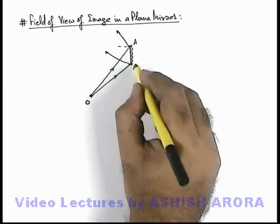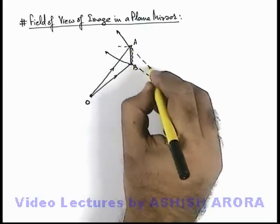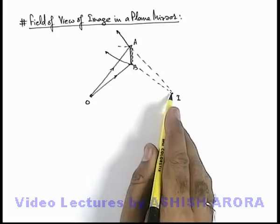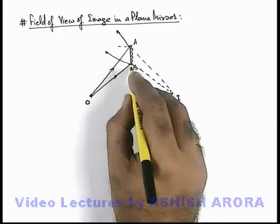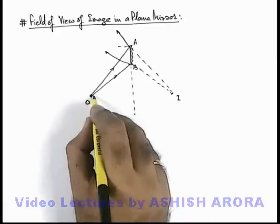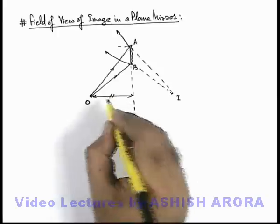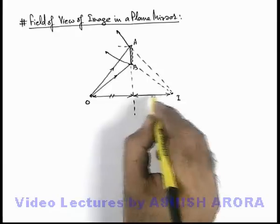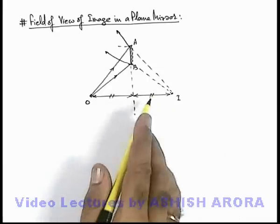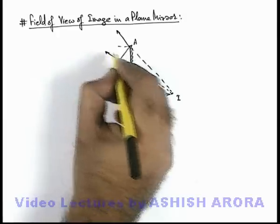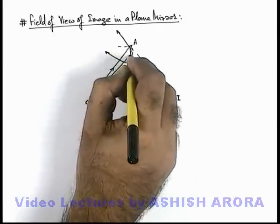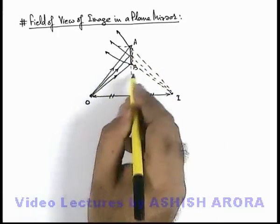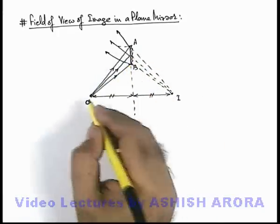These reflected rays appear to be coming from a point which is the image. This image will be located at the same distance from the mirror at which the object is located — the same distance behind the mirror. In this situation, all those light rays reflected from the mirror between OA and OB will participate in image formation, as no other light ray from the object will be incident on the mirror to produce any image.